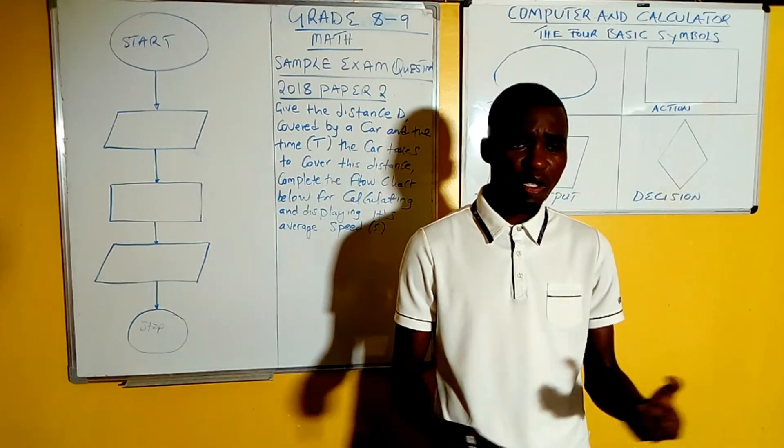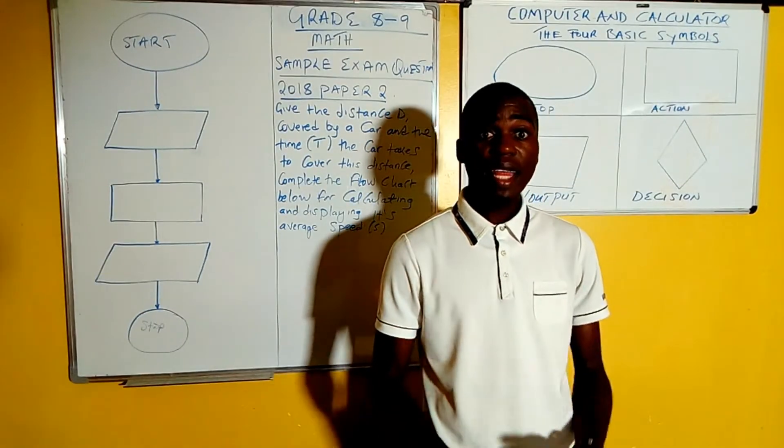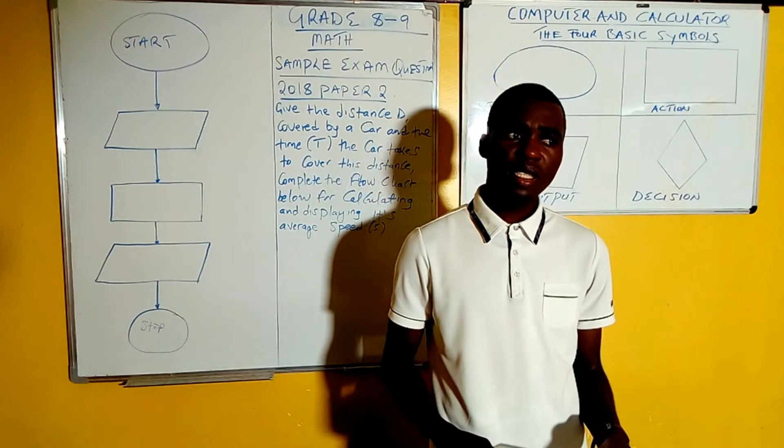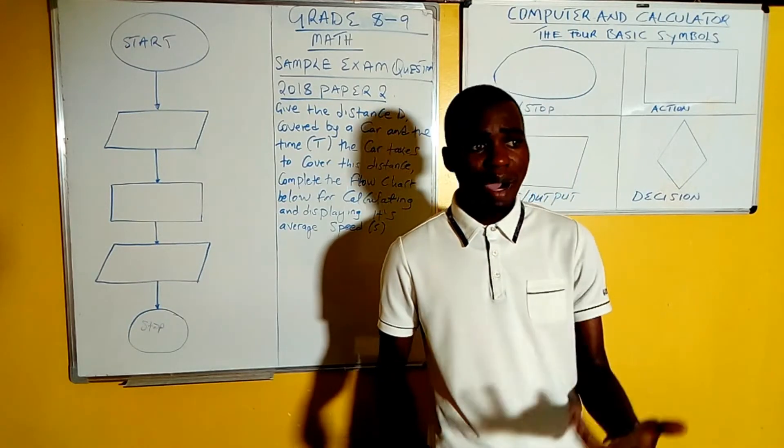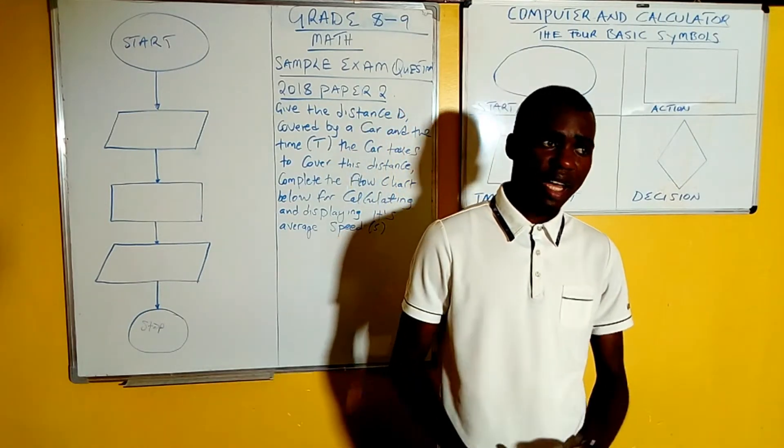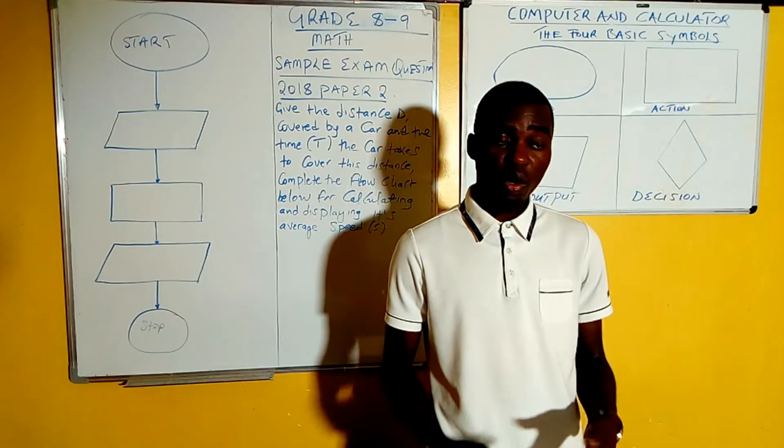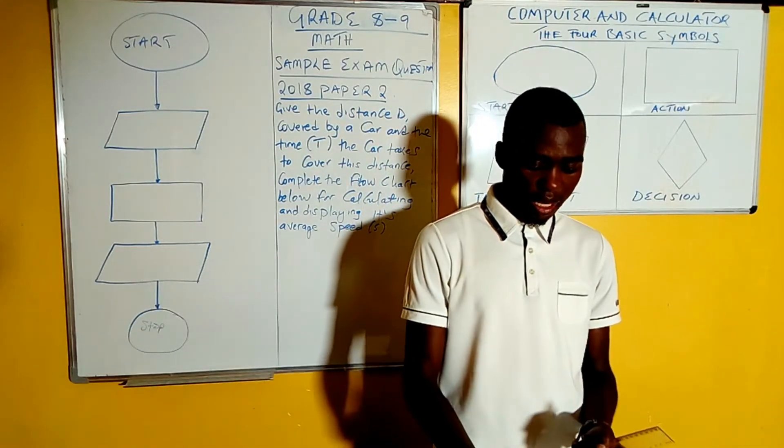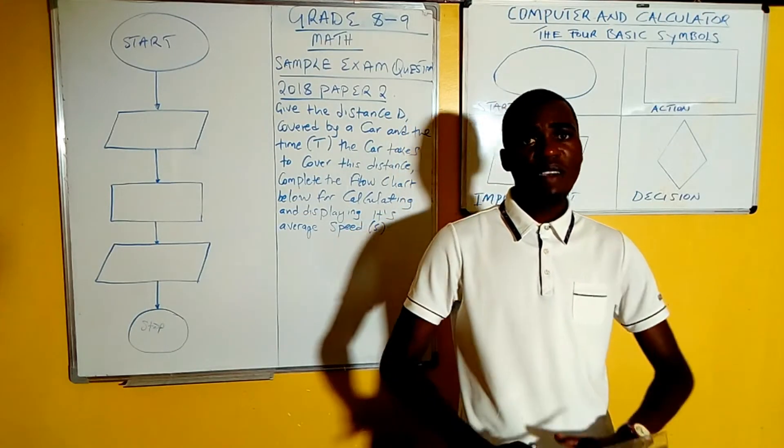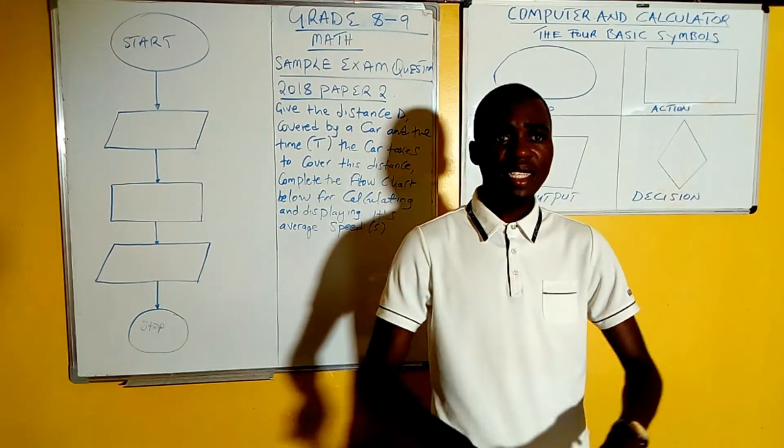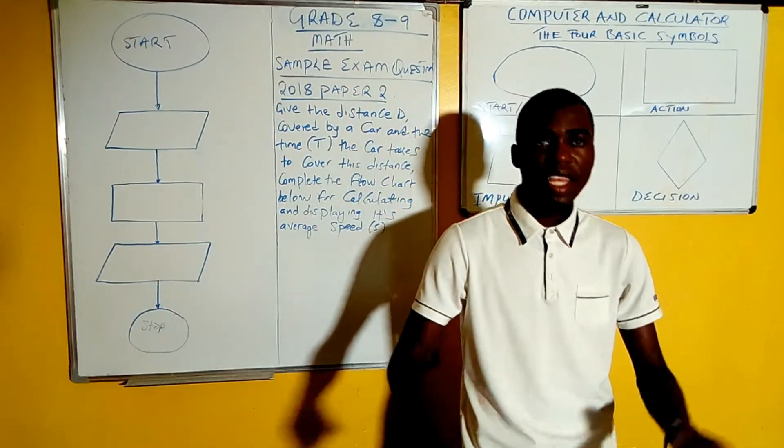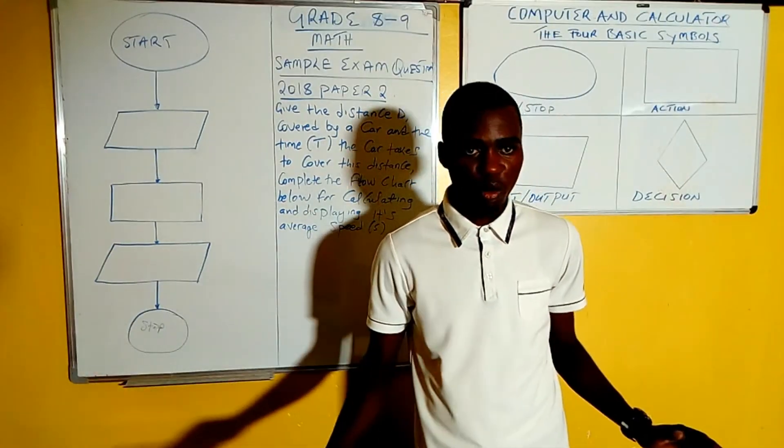You have to know the inputs and outputs of a computer. An example of an input is a keyboard, a mouse, or even a storage device like a flash disk - those are the things you are putting in. Then we also have outputs. Outputs are things that the computer produces after processing.